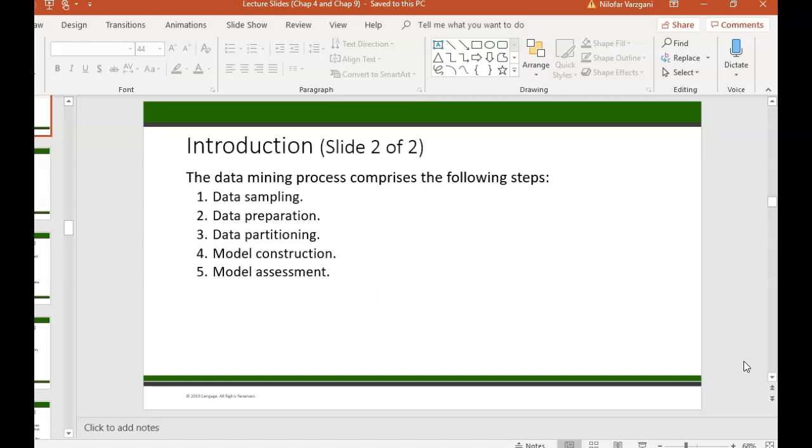This could include missing values, outliers, reducing the dimensions of the problem by getting rid of unnecessary attributes, just like I mentioned earlier, or it could just simply mean using a smaller sample of the data that you have at hand.